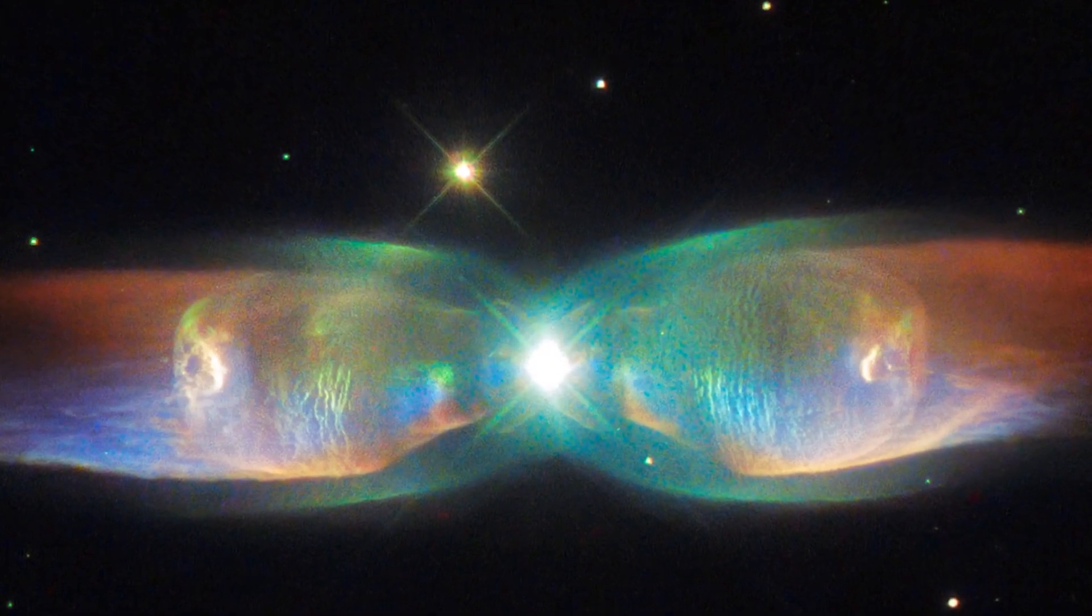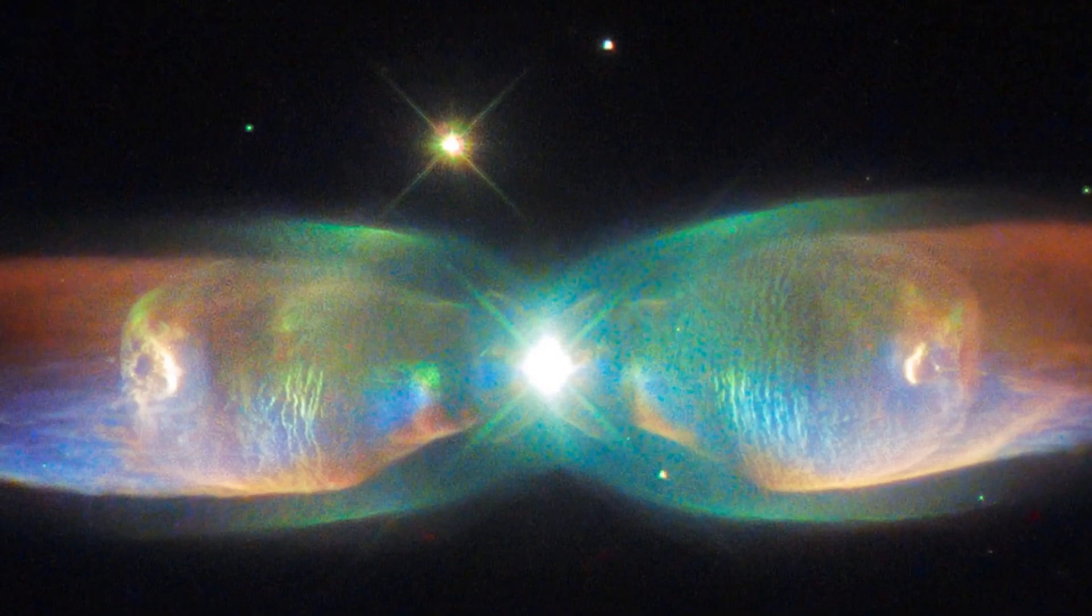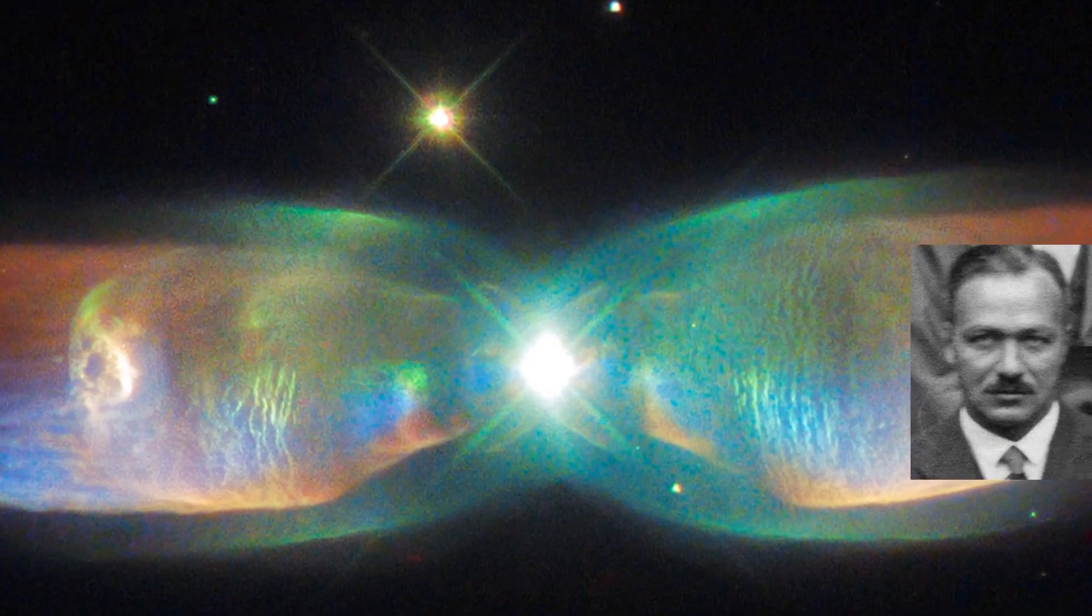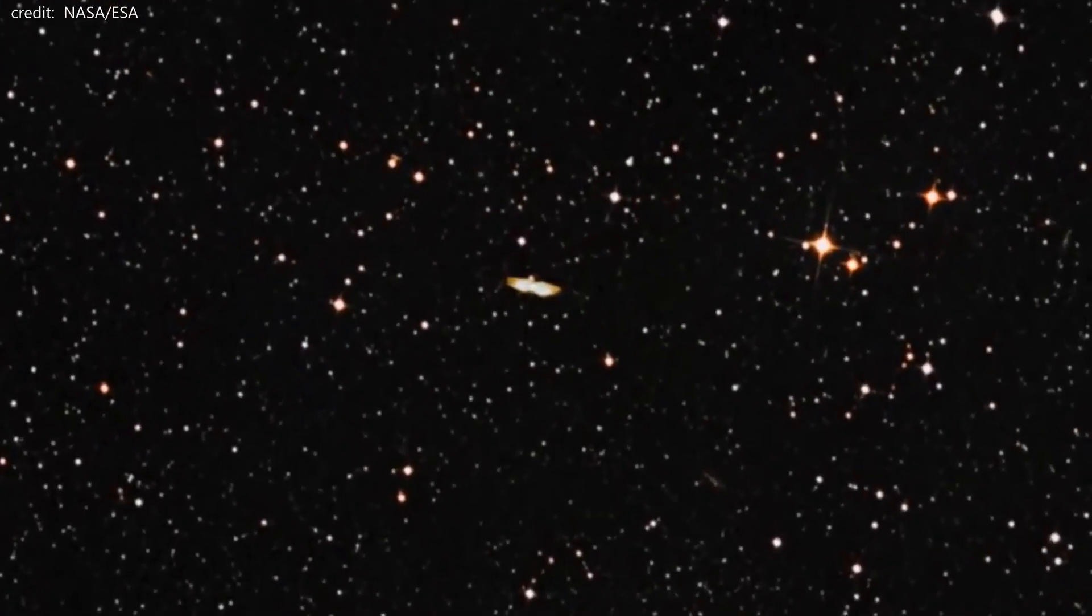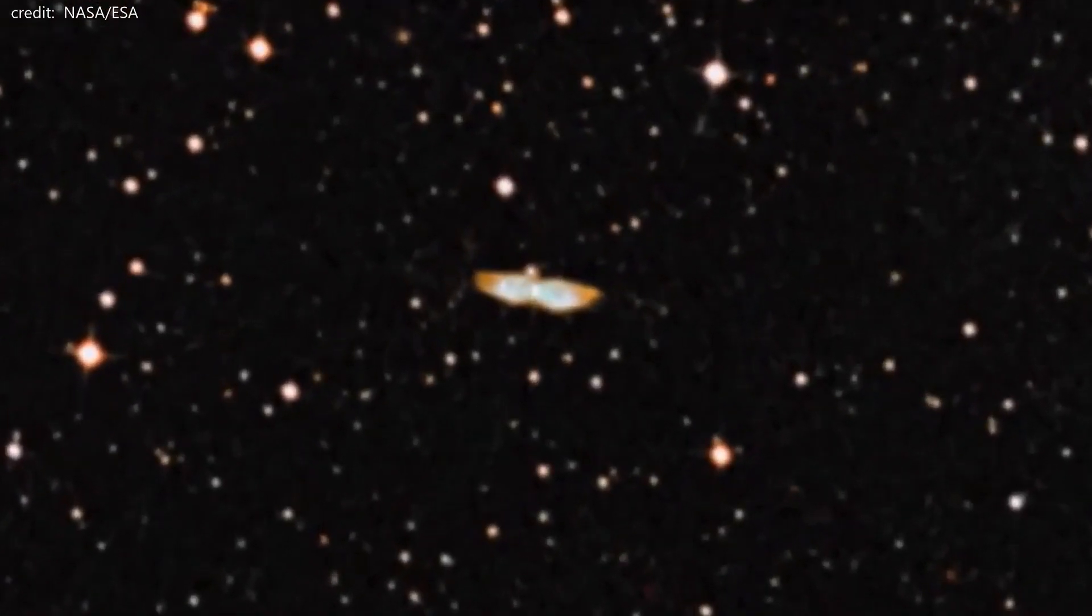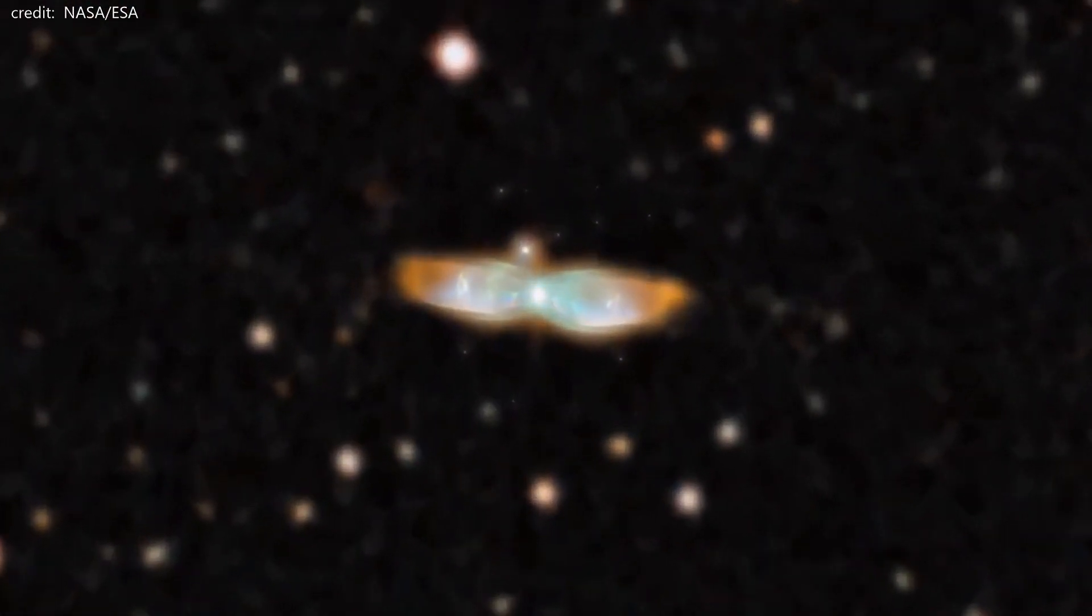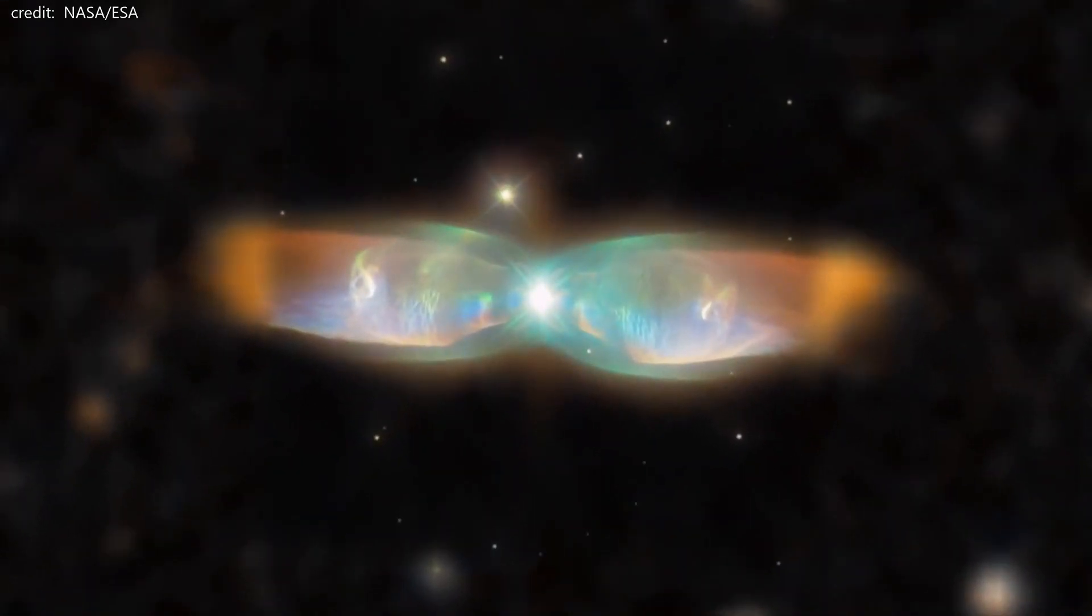The Twin Jet Nebula or M29 is a planetary nebula that was discovered by Rudolf Minkowski in 1947. It is located about 2100 light years away from earth. This bipolar nebula takes the peculiar form of twin lobes of material that emanate from a central star.